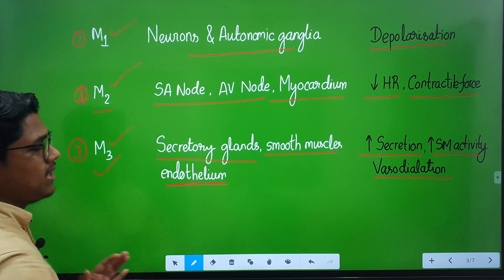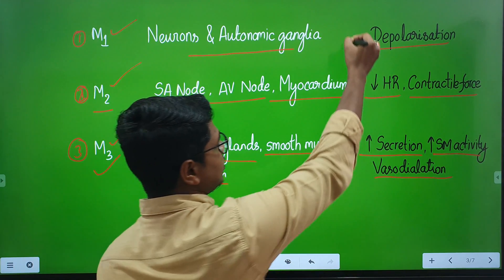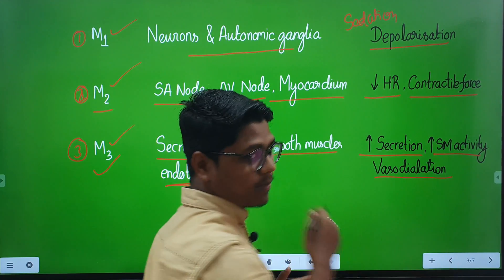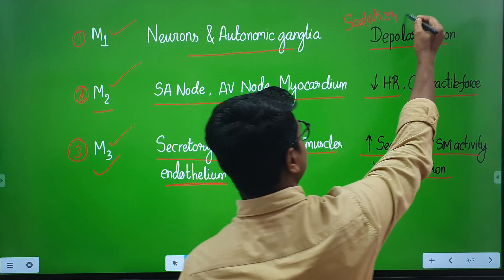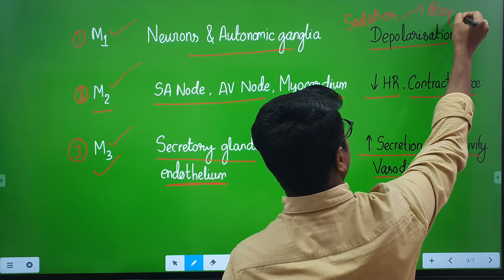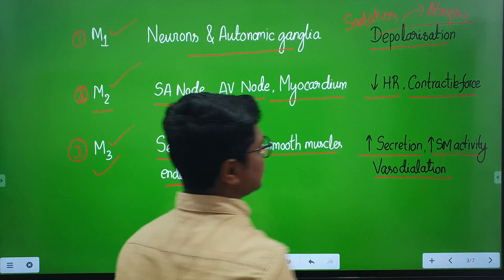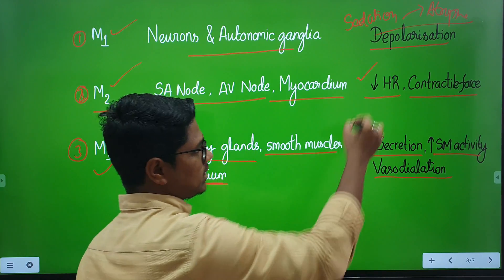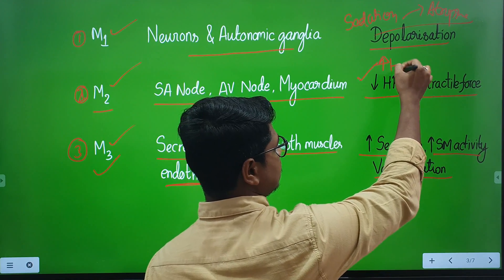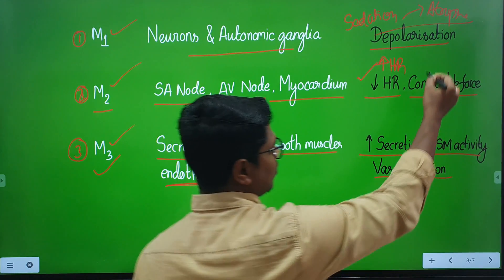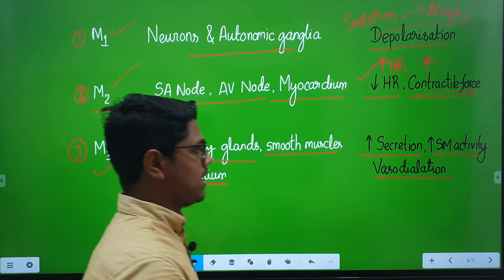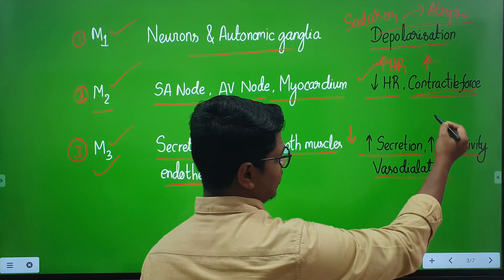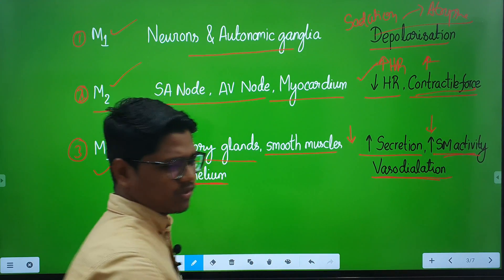When M1 is blocked, it will cause sedation — the opposite of excitation. Sedation is found to some degree with atropine, but not with glycopyrrolate. When M2 receptors are blocked, that will cause an increase in heart rate — tachycardia — and also the force of contraction will be increased. When M3 receptors are blocked, they will reduce the secretion of glands, reduce smooth muscle activity, and cause vasoconstriction, though the effect of vasoconstriction is not so profound.